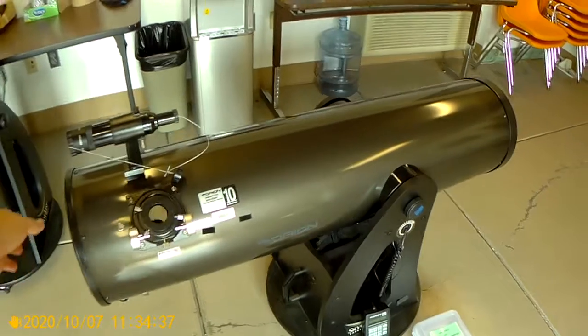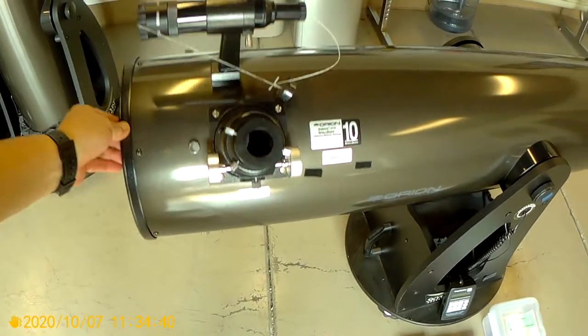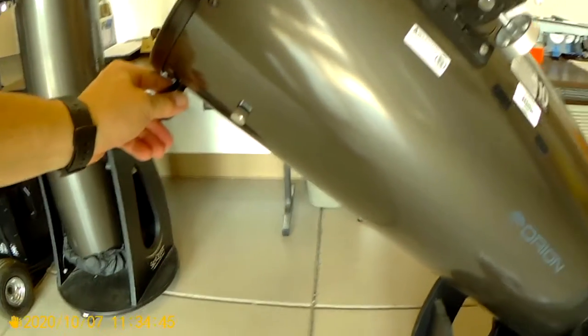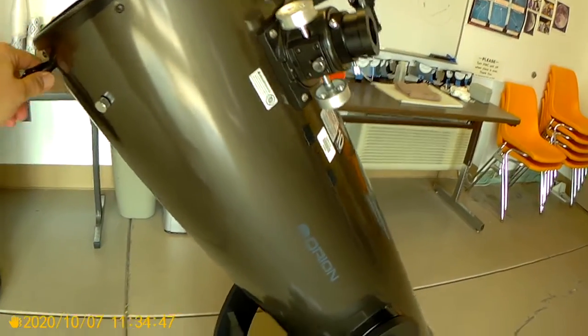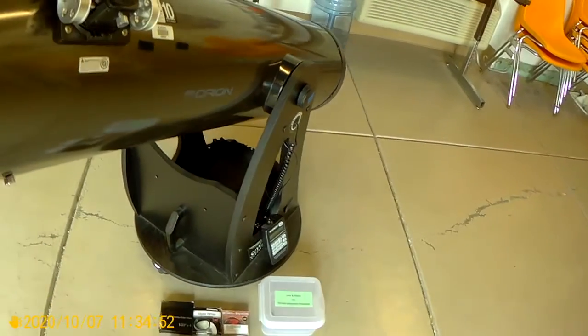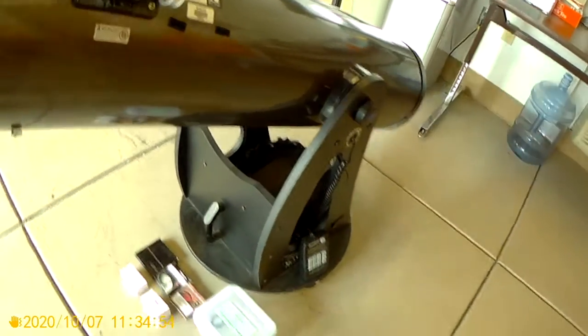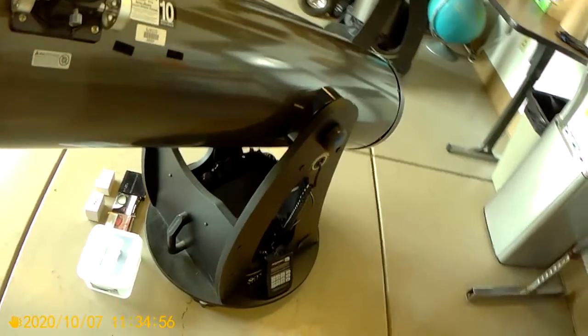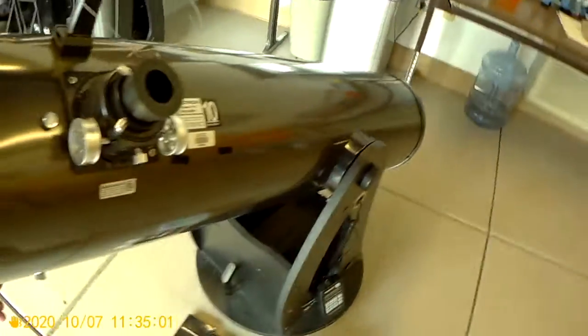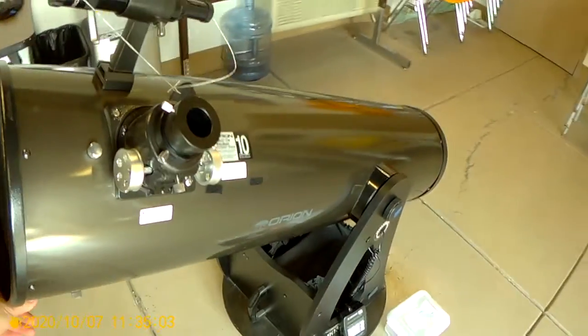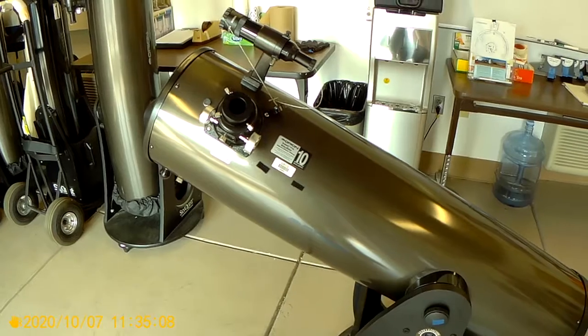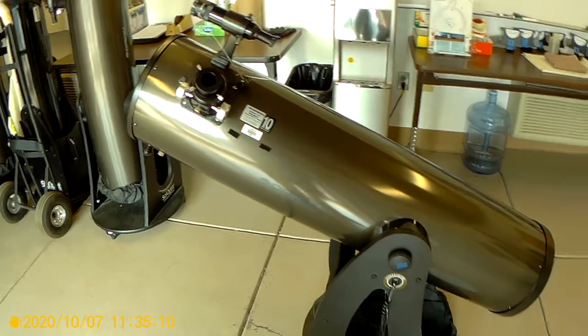So when you want to move this around, you just grab, there's a little handle on the bottom here, to raise or lower the telescope. And then you could also turn it 360 degrees in any direction that you want. So this is our new telescopes that are only about two years old.